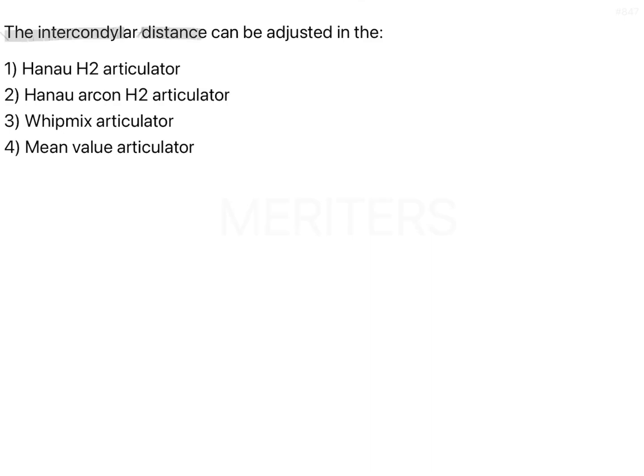The intercondylar distance can be adjusted in the Hanau H2 Articulator, Hanau Archon H2 Articulator, Whip Mix Articulator, and Mean Value Articulator. As an undergraduate, these questions can be a little intimidating because you are expected to remember the designs of the articulator, which is nearly impossible given the wide number of things involved. So here are a few images to keep in mind.